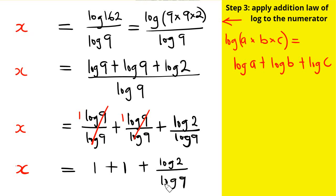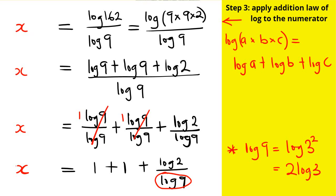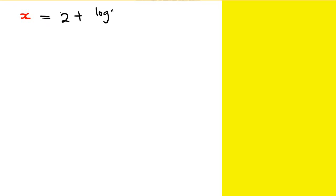Having done all these things, what we're going to do is break down log 9. Remember, log 9 is the same as log of 3 raised by the power of 2, which equals 2·log 3. This will replace log 9. At the end of the day, we have x equals 2 — because 1 plus 1 is 2 — plus log 2 over 2·log 3. That is the value of x.